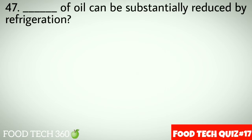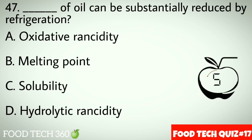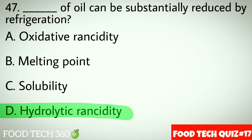Question number 47: Dash of oil can be substantially reduced by refrigeration. Options: A. Oxidative rancidity, B. Melting point, C. Solubility, D. Hydrolytic rancidity. Correct answer: D. Hydrolytic rancidity.